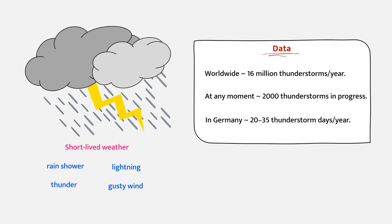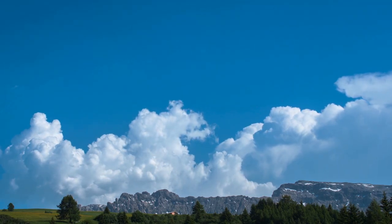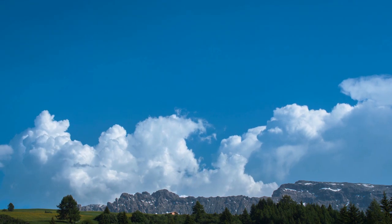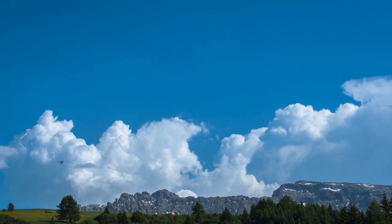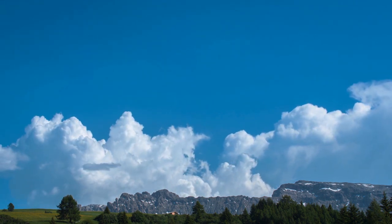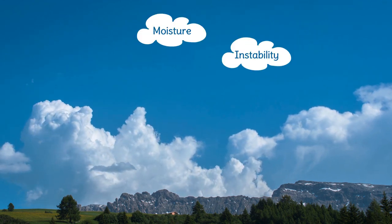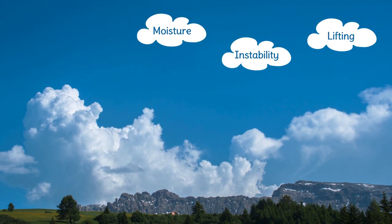Thunderstorms normally happen in the summer and most likely in the afternoons, but they can also arise in the winter. For a thunderstorm to form, these three conditions are required: moisture, atmospheric instability, and lifting.